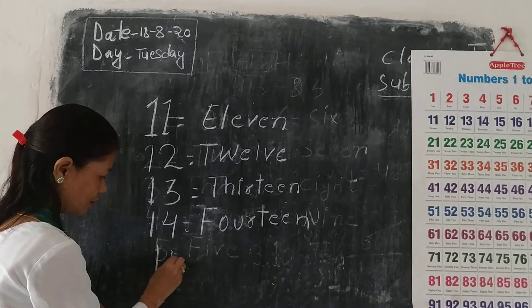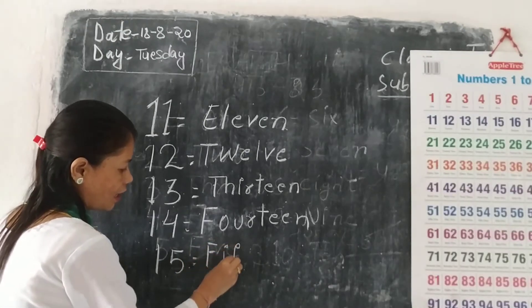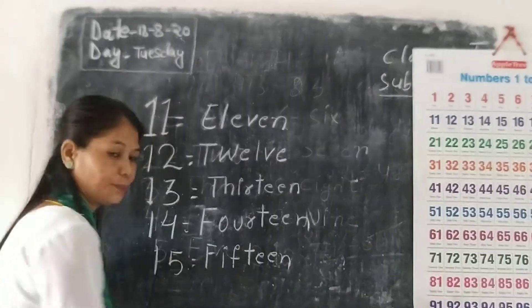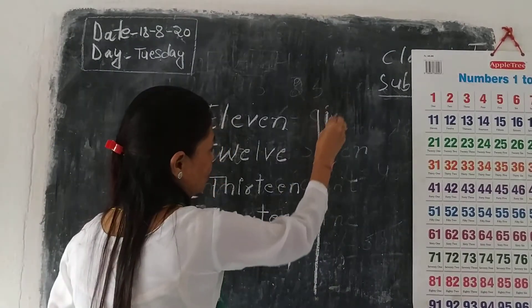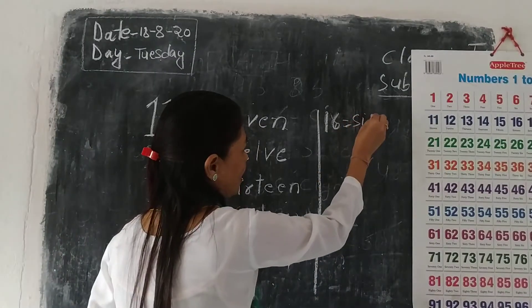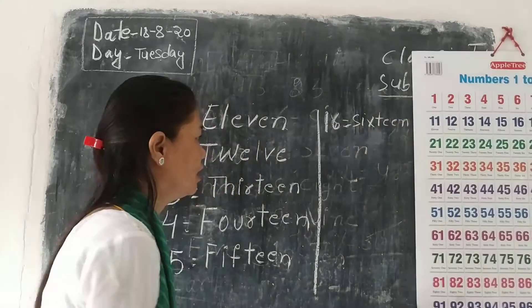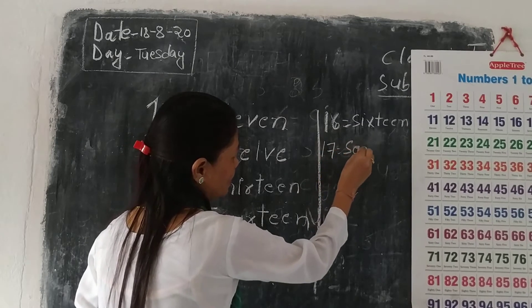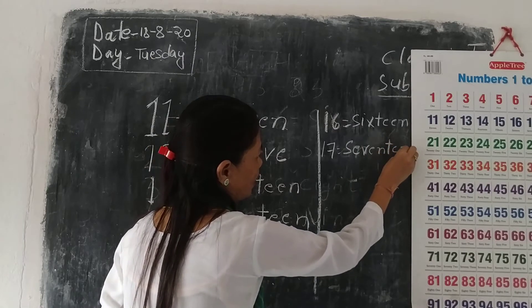15 — spelling: F-I-F-T-E-E-N. 15. Okay, and next: 16 — F-I-S-T-E-E-N. 16. And 17 — S-E-V-E-N-T-E-E-N. 17.